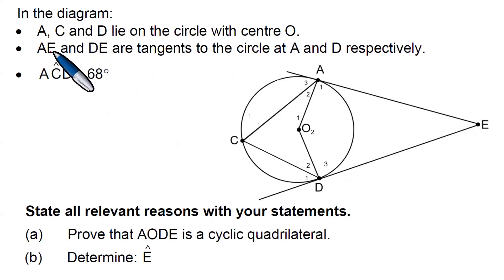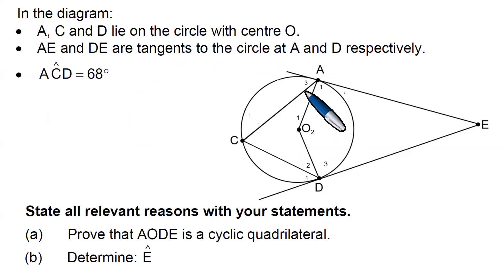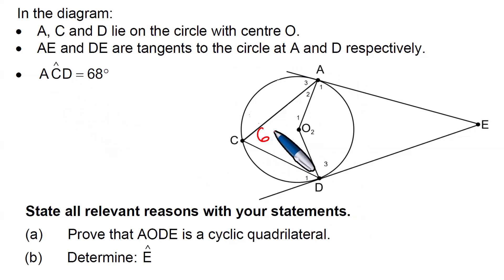In the diagram, A, C and D lie on the circle with centre O. Here is the centre O of the circle. AE and DE are tangents to the circle at A and D respectively. Angle ACD is 68 degrees — so this angle here is given as 68 degrees. Just take note of that.